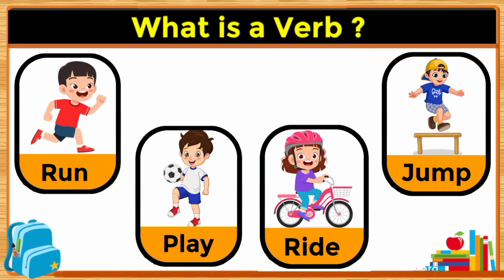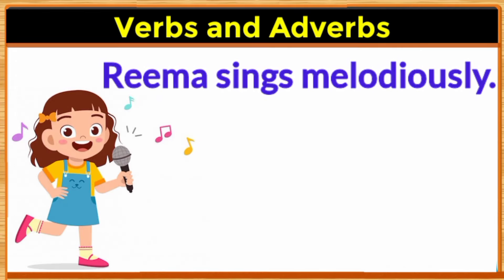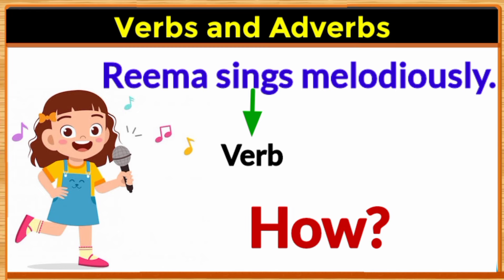Let's see one example: Rima sings melodiously. In this sentence, the action that Rima does is sings, so sings is the verb. Now we need to know how Rima sings — she sings melodiously. We are getting the answer to the question 'how,' and when we get the answer with a word, that word is called an adverb. So melodiously is the adverb, and it gives us more information about the verb.